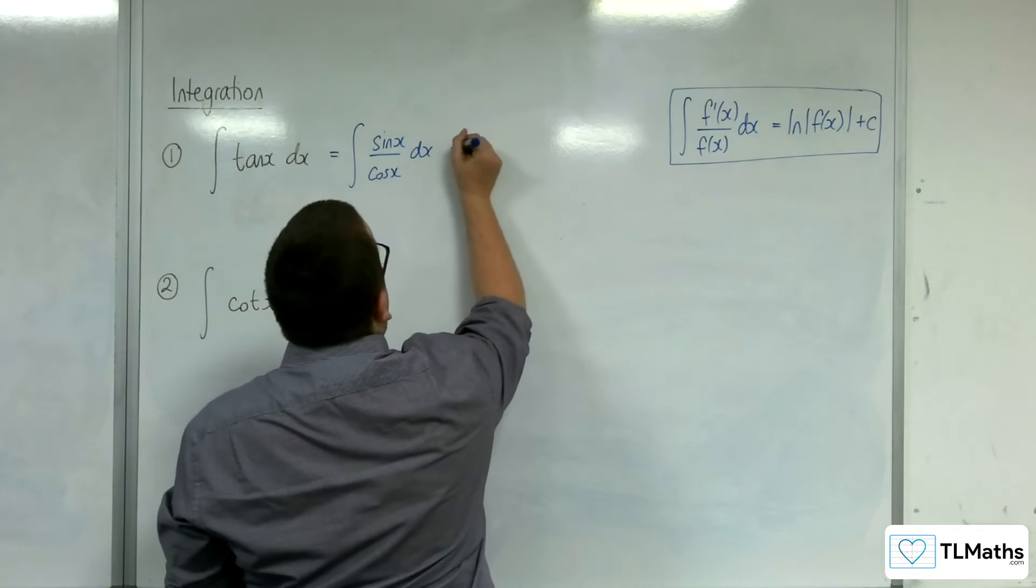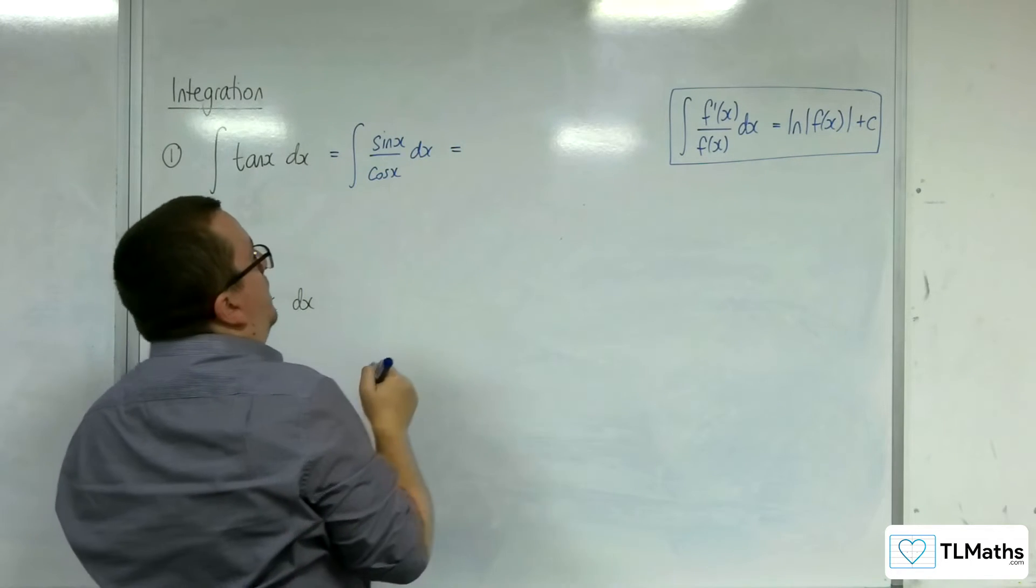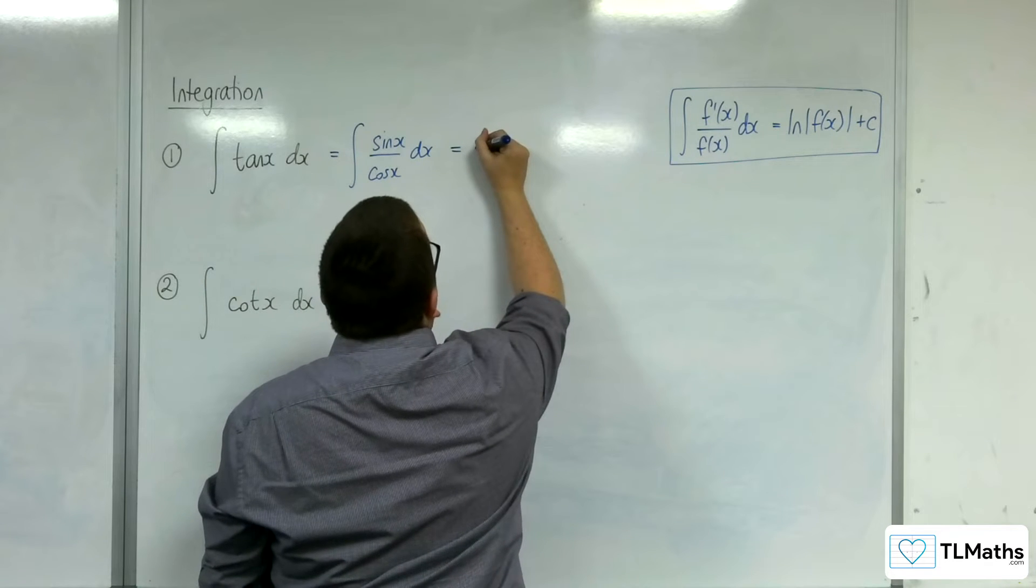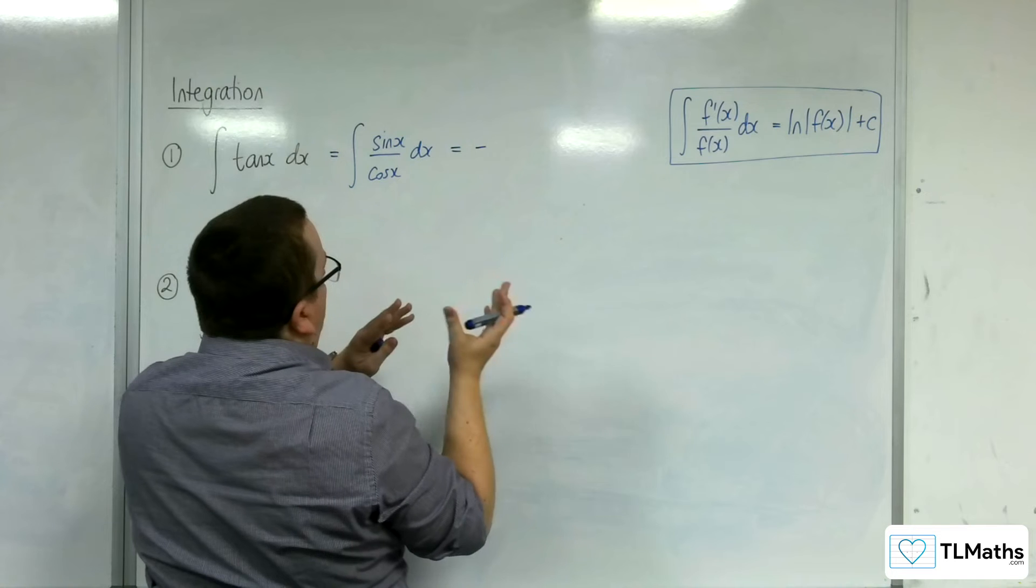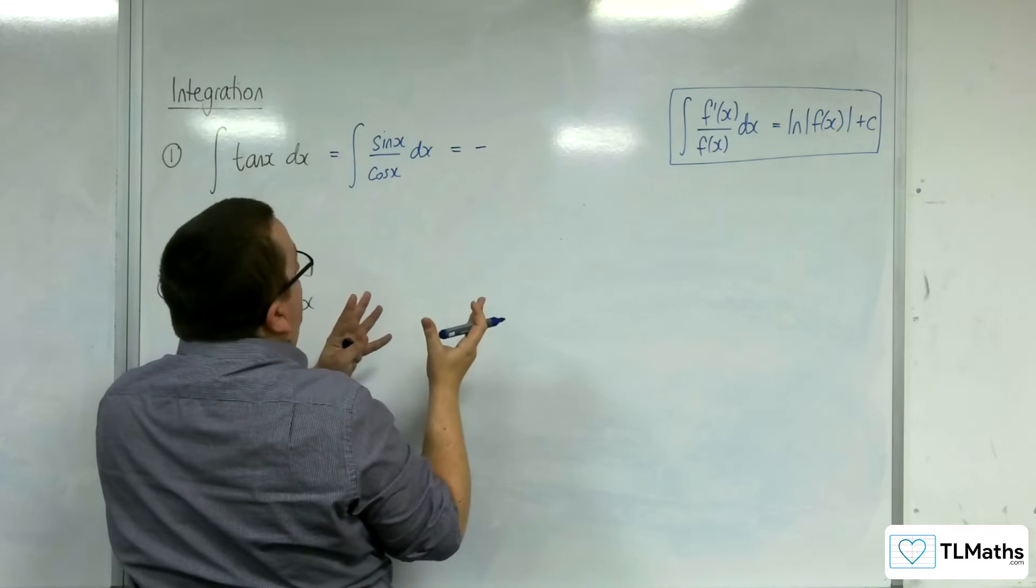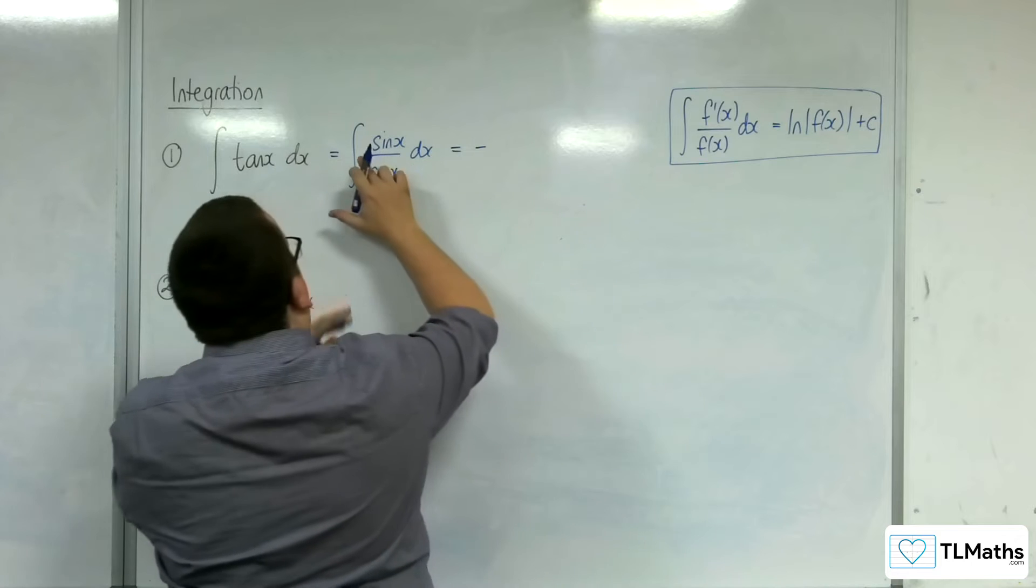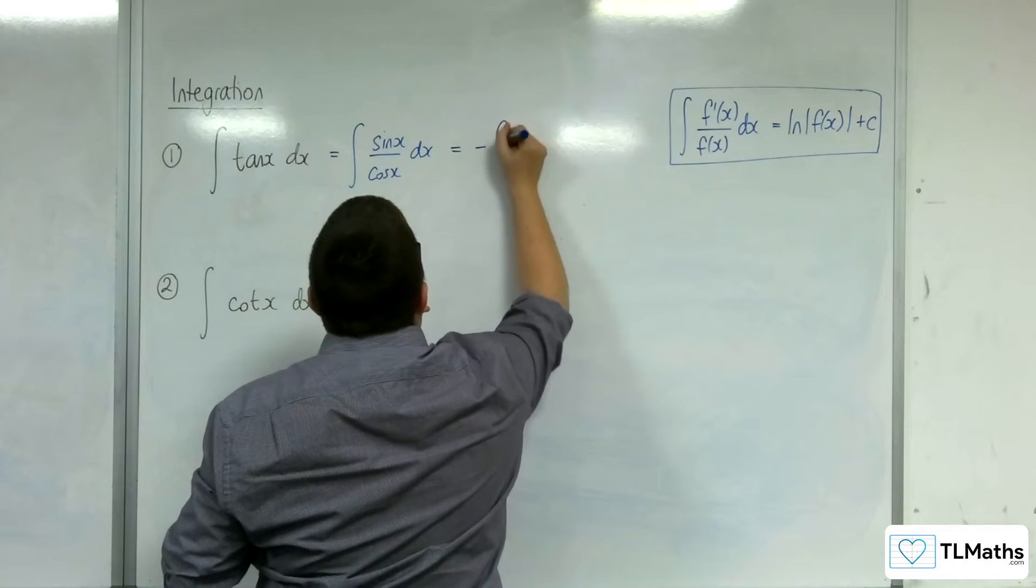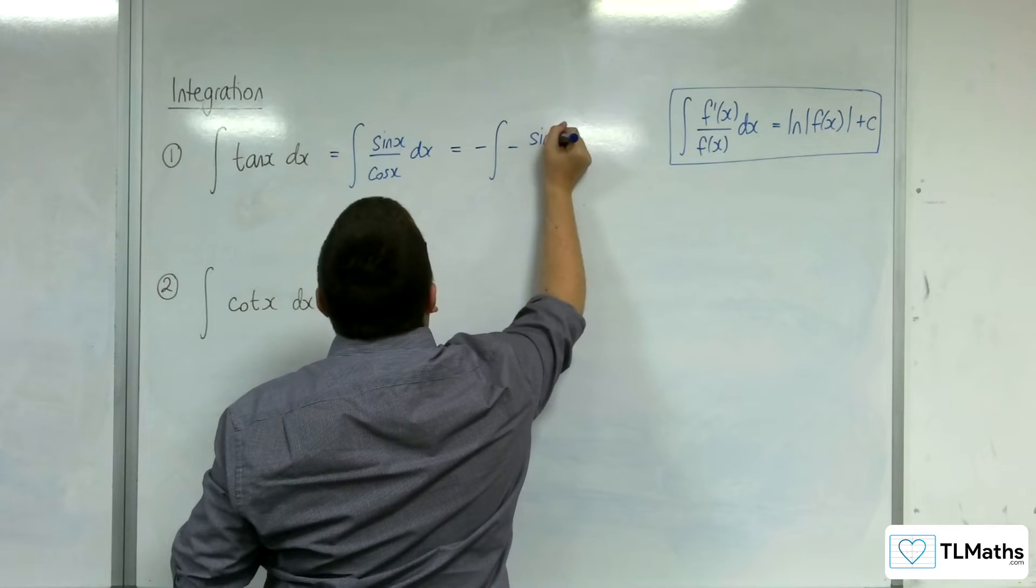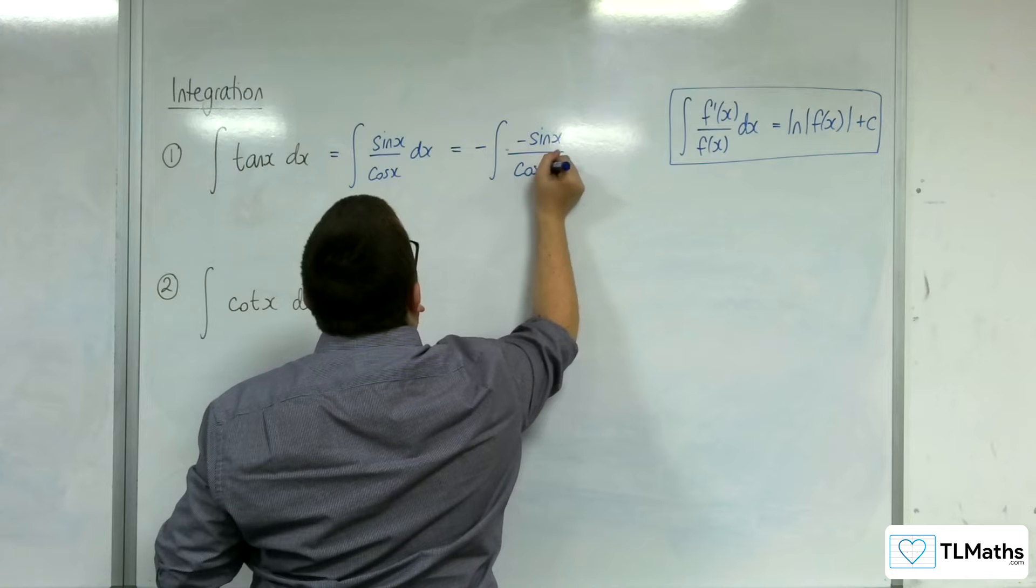So because cos x differentiates to minus sin x, we would have the negative. You can kind of think of it as either going straight to the answer, or you can think, I could multiply by minus 1 twice, and that won't change anything. If I put the minus sign there, it might make it a little bit clearer.